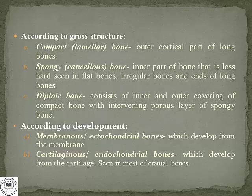The last classification is according to the development of the bone. Bones can be developed by two processes: first, membranous or ectochondrial, which develop from the membrane itself; and second, cartilaginous or endochondrial bones, which develop from cartilage. This classification and development will be studied and covered in the next part of the topic.